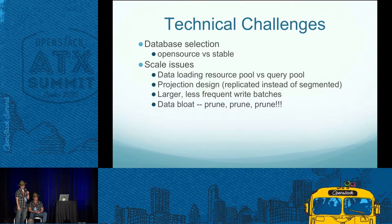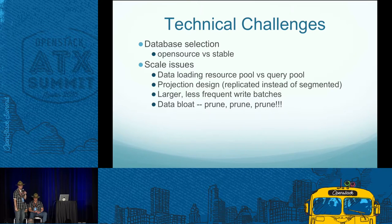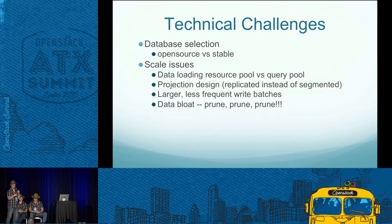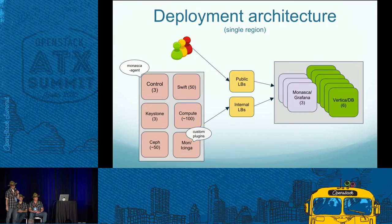Another big one Ryan touched on is maintaining the size of our database and making sure it doesn't grow without bounds. The network metric issue he talked about was real — we literally deleted about 70 percent of the data in the database at the time. In addition to that, we're pruning our metrics. Keeping control of the size of that data has been really helpful.